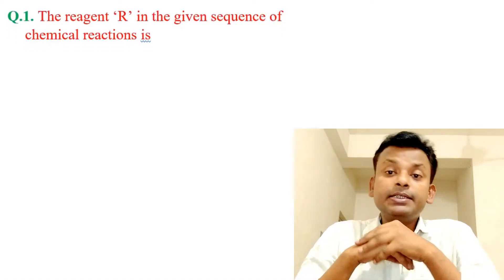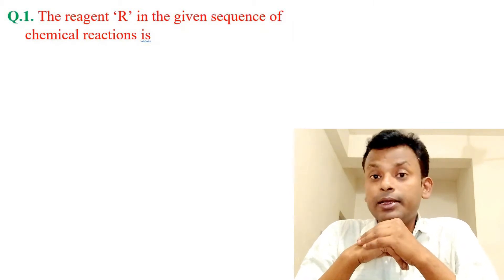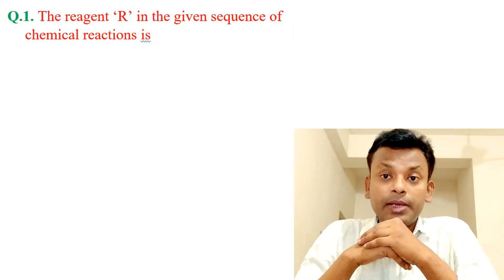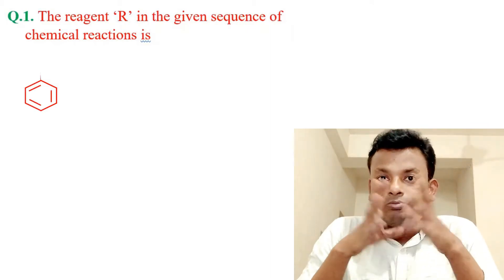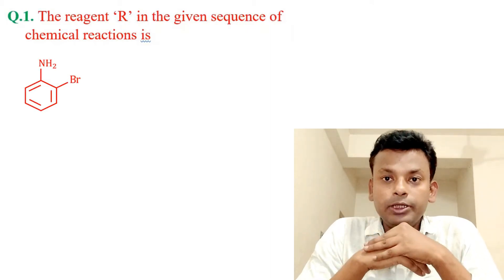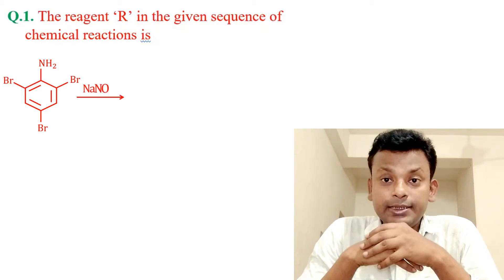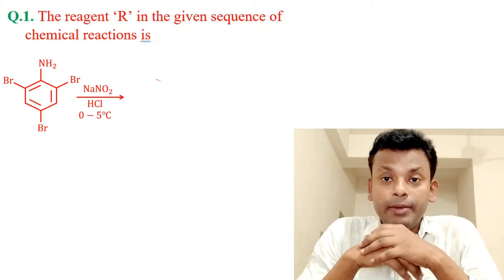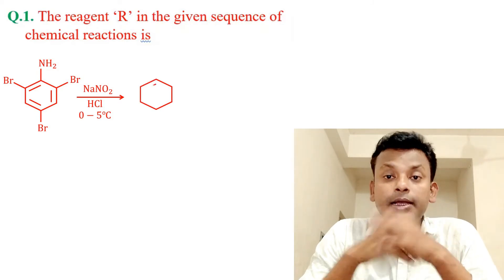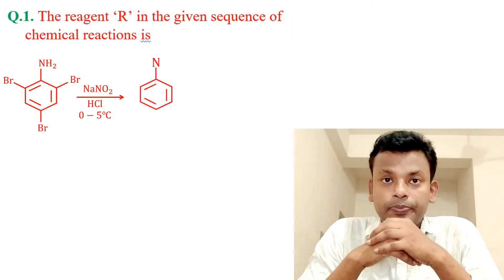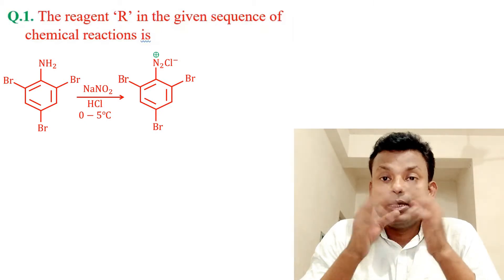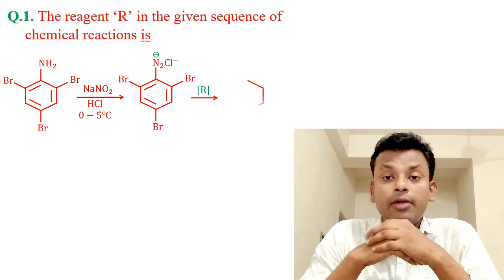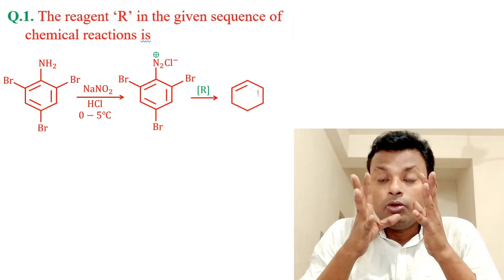The reagent R in the given sequence of chemical reaction is: starting compound reacts with NaNO2 and HCl at 0 to 5 degree centigrade temperature, gives that product. And R reacts with it, gives final product. Here, find out the R.